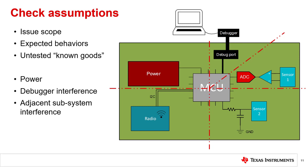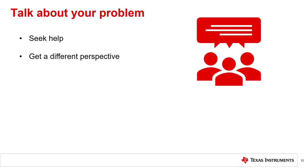Getting another viewpoint of the problem can help you identify more assumptions to check. This leads us to our final debug concept: talk about your problem. When facing a difficult problem, it will often be beneficial to seek out help. Talking with a colleague about your issue and getting a different perspective can often lead to new tests or assumptions to check.